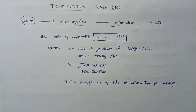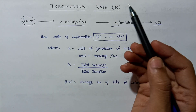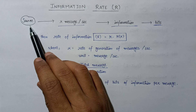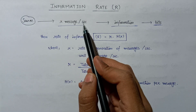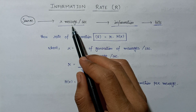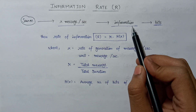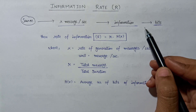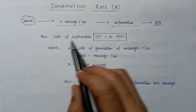In this lecture we are going to study about information rate. Before understanding information rate, let us talk about the source that generates messages per second. Each message generated by this source will contain some information content, and we know that information can be represented in the form of bits.